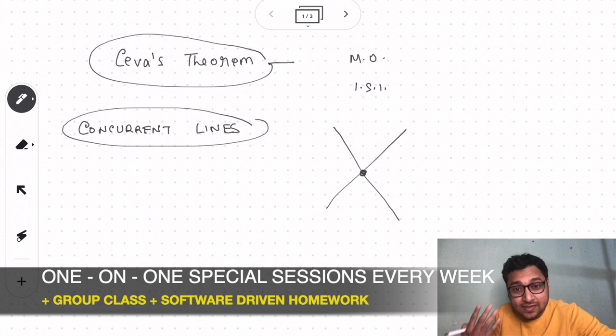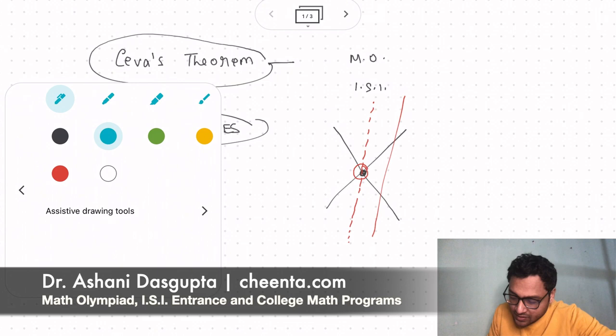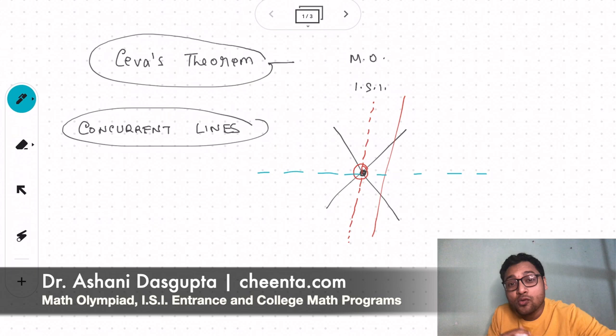If I put a third line in this system, it may not pass through this particular point. So if all of these three lines pass through the same point, then we say that these three lines are concurrent, that they pass through the same point. Similarly, if I have a fourth line which is passing through the same point, we say these four lines are concurrent.